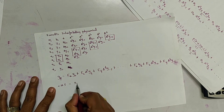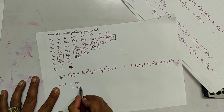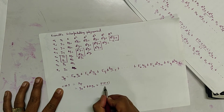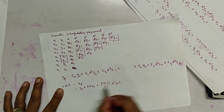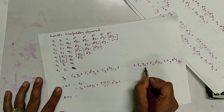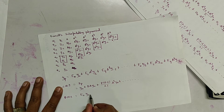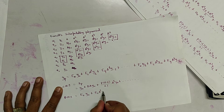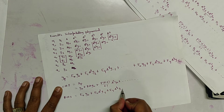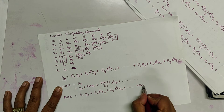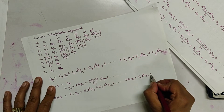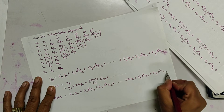LHS is same as Gauss forward interpolation: yp gives y0 plus p del y0 plus p(p-1) over 2-factorial times del-squared y0, and so on. I have written directly following the previous video. So RHS equals e0 y0 plus e2 del-squared y-minus-1 plus e4 del-4 y-minus-2 plus dot dot dot plus f0 y1 plus f2 del-squared y0 plus f4 del-power-4 y-minus-1 plus dot dot dot.